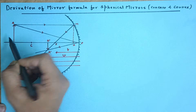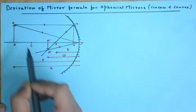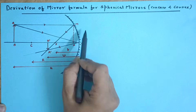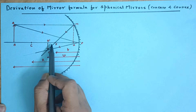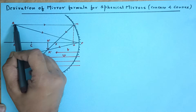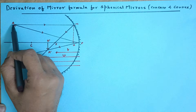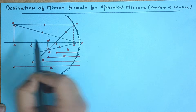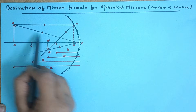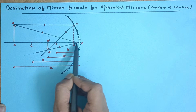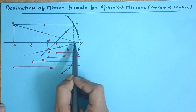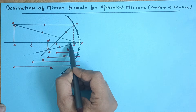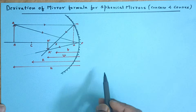Here we have an object in front of a concave mirror and I have kept the object beyond C. Its real and inverted image is formed between F and C. For this, I have taken one ray parallel to the principal axis; after reflection, it will pass through the focus. Another ray directly strikes the pole, in which case the principal axis becomes the normal, and the reflected ray bounces back below the principal axis.